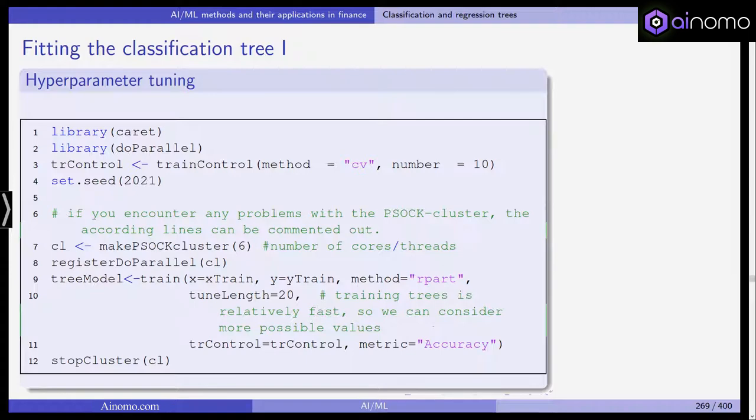Set seed in line four. If you encounter any problems with the parallelization, just comment these two lines out. Tree model is we train based on x-train with the response being y-train. The method is rpart, which is for partitioning. The tune length is 20 and the training is relatively fast. TR control is what we set in line three for using tenfold cross-validation to select the hyperparameter. The metric used for training is the accuracy and then we stop the cluster.